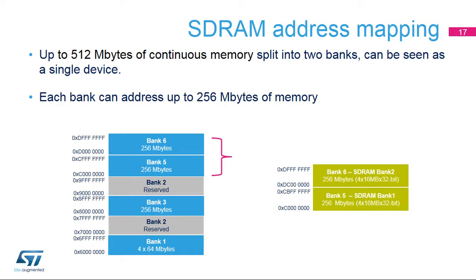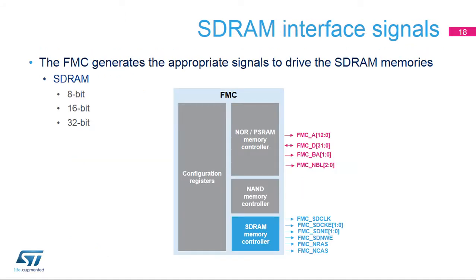Banks 5 and 6 are used to interface with SDRAM memory. Each bank can address up to 256 megabytes of memory, and the two banks can be used to interface with two SDRAM devices. The FMC generates the appropriate signals to drive SDRAM memory. The address and data are shared with the NOR PSRAM controller. The bank address signals FMC BA0 and FMC BA1 are shared with FMC A14 and FMC A15, respectively. The SDRAM controller has dedicated signals.